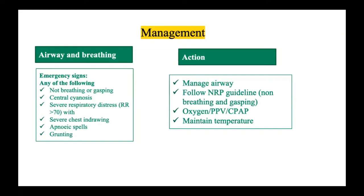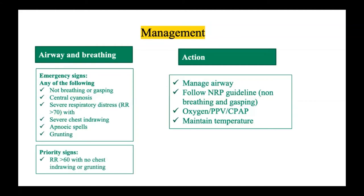Indications for positive pressure ventilation as per NRP: apnea, shallow breathing or gasping, and heart rate falling below 100. For term babies, start with room air; for preterm babies, start between 21–30% oxygen. After heart rate improves, if grunting, retractions, and cyanosis persist, consider CPAP. Remember that hypothermia can exaggerate pulmonary hypertension, leading to cyanosis and severe respiratory hypoxemia — therefore always maintain normal temperature even while managing airway and breathing.